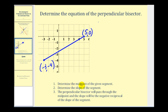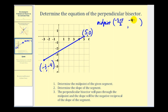The first step is to determine the midpoint of the given segment. Remember, that's going to give us one point on the perpendicular bisector. To determine the x-coordinate of the midpoint, we sum the x-coordinates and divide by two: negative three plus five divided by two. For the y-coordinate, we add the y-coordinates and divide by two. So the x-coordinate is negative three plus five, that's two divided by two, which is positive one. The y-coordinate is negative four plus zero divided by two, which is negative two.